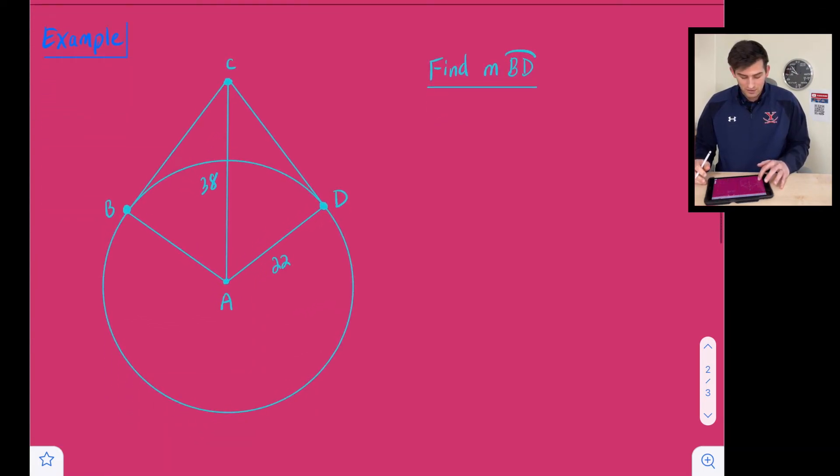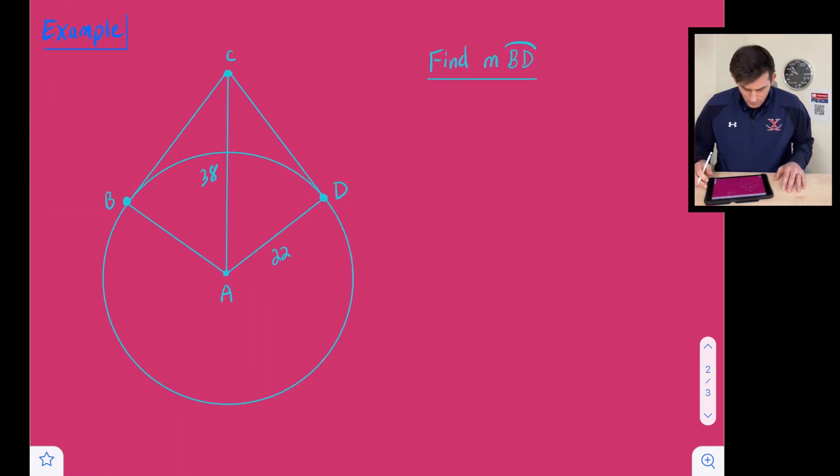Last example that we're going to look at here, we want to find the measure of arc BD. So this arc right here. Well, we are given two tangents, BC and CD. And so we know that if those are both tangents, then this angle that is formed right here is a 90 degree angle. So essentially we have two right triangles here that are going to be congruent to one another. So what we can do is go ahead and solve for our angles up here. So we just can solve for one of those angles.